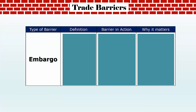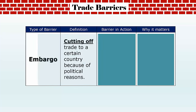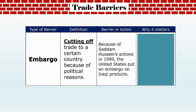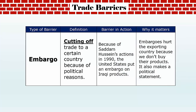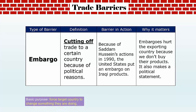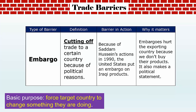The last trade barrier we discuss is an embargo. Unlike tariffs and quotas, which are put in place for economic reasons, an embargo has a different, political purpose. An embargo is defined as cutting off trade to a certain country for political reasons. For example, when Saddam Hussein invaded Kuwait in 1990, the United States and the U.N. put an embargo on all Iraqi products. Embargoes are designed to hurt the exporting country economically and force the target country to change something they are doing.